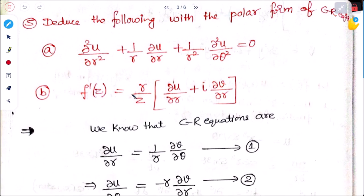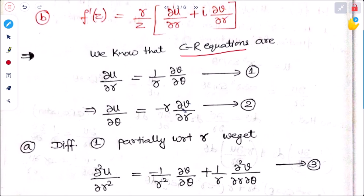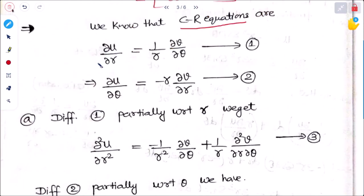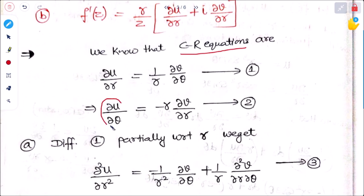Everything here is given in polar form. Using Cauchy-Riemann equations for polar form — ∂u/∂r = (1/r)(∂v/∂θ) and ∂u/∂θ = minus r(∂v/∂r) — we need to find ∂²u/∂r² by partially differentiating the first equation, and ∂²u/∂θ² by differentiating the second equation. We will take double derivatives of both equations.